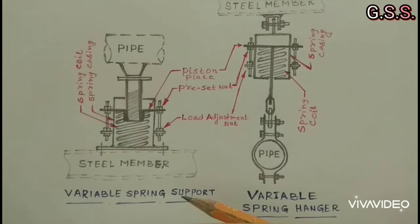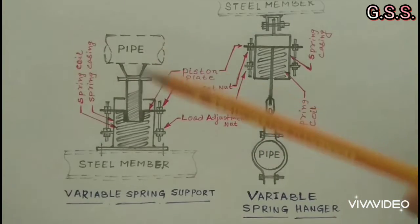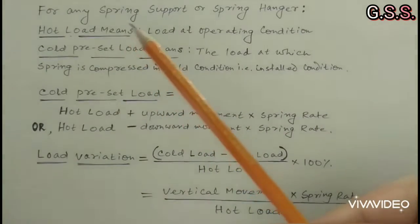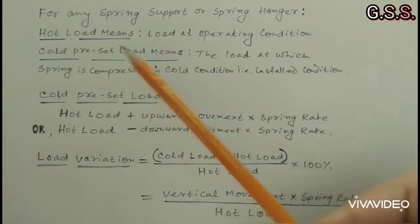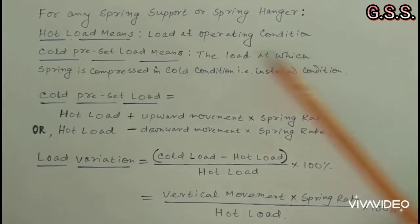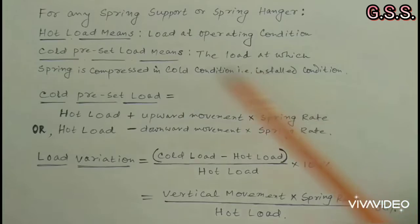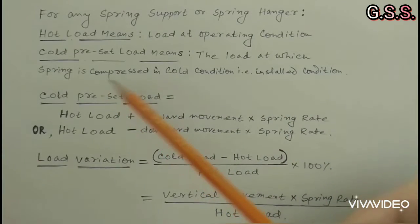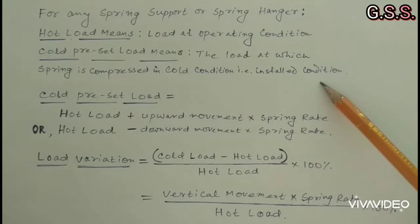Spring support or spring hanger is used where a pipeline has vertical movement. For any spring support or spring hanger, hot load means load at operating condition. Cold preset load means the load at which the spring is compressed in cold condition, that means in installed condition.